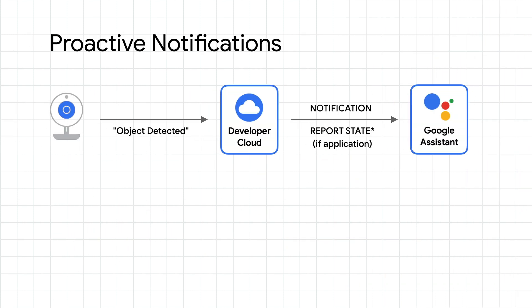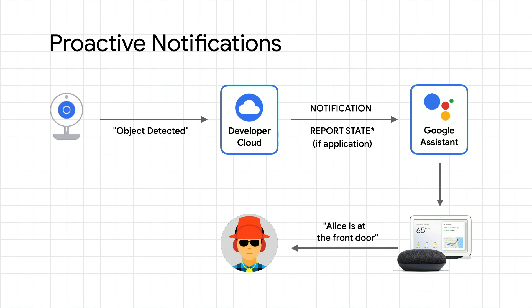The assistant will then send the notification to users through all Google Home devices, unless a particular device has been set to do not disturb. The event ID prevents users on a shared Google Home device from getting duplicate notifications.